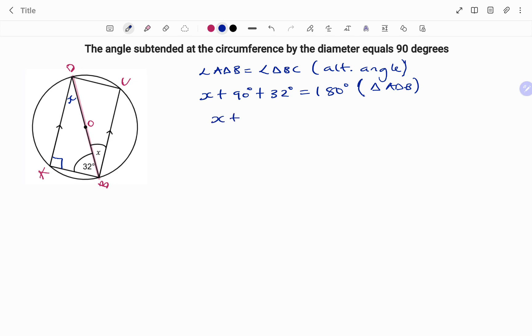X plus 90 plus 32 - that's 122 degrees - equals 180 degrees. Therefore, using the balance method, x equals 180 degrees minus 122 degrees. Therefore, x equals 58 degrees. Let's look at one more example.